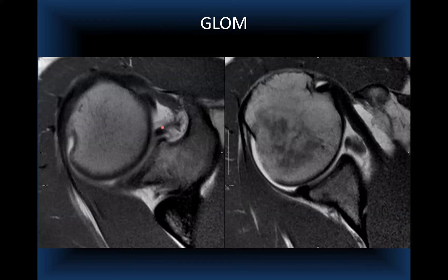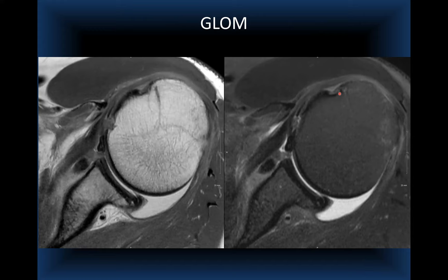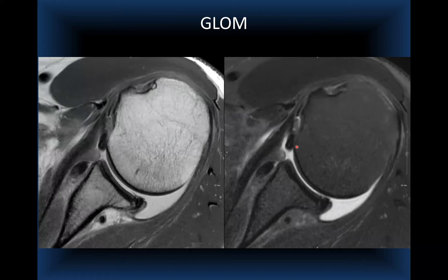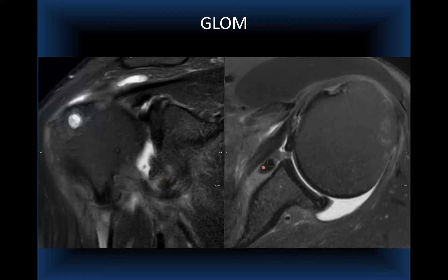Another GLOM case with a Hill-Sachs lesion shows the anterior labrum displaced and appearing as an ovoid mass. In a case with two apparent ovoid masses, since you cannot have two GLOMs, I check the bicipital groove — which is empty — confirming one mass is an intra-articular dislocated long head biceps tendon, while the other corresponds to the torn anteroinferior capsulolabral complex.